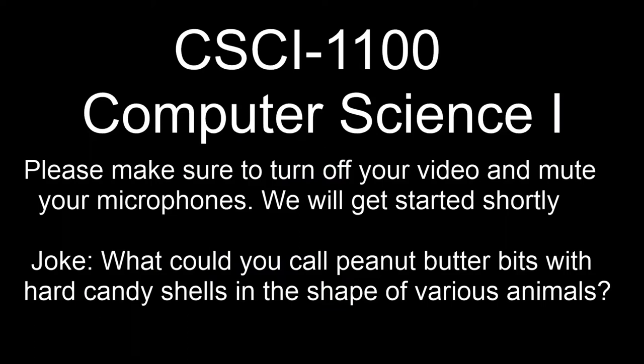What do you call peanut butter bits with hard candy shells in the shape of various animals? If you do the local crossword puzzle, the Albany Times Union, you already know the answer. The answer is 'Reese's Species' — because that's a Reese's Piece in the shape of animals. It's a great pun.